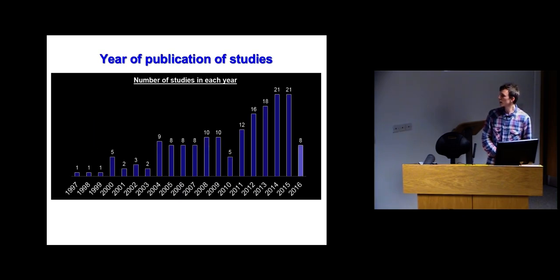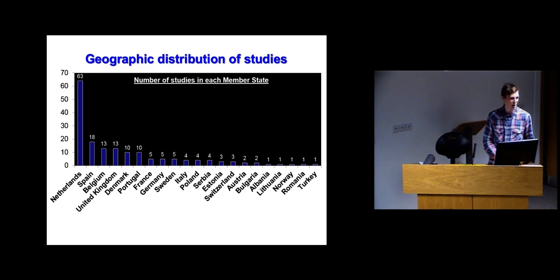The years of the studies - the earliest one I found was in 1997. There seems to be a positive trend going up towards the latest full year of 2015, going from one to up to around 20 in the recent years. This year there was only eight, but a lot of them were probably not published yet. For the geographic distribution of studies, the vast majority were in the Netherlands, but they did tend to be very specific. Then Spain was next with 18. Belgium and the United Kingdom was 13. Denmark and Portugal was 10. France, Germany and Sweden was five. The rest did less than five.